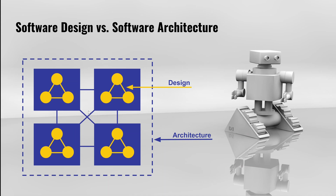Software design I consider to be about the structure inside a single process — meaning how that single process implementation is structured internally. In the diagram here, it is these yellow structures. Thus, when I talk about software design in this and future videos, I will typically mean the internal design of a single application or service.